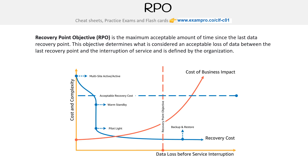We have cost and complexity, but this time it's replaced with data loss before service interruption. So for multi-site, it's going to be very expensive and high up here. It's not like a perfect curve — it looks a bit different. Here we have warm standby, pilot light. You'll see that the data loss is not a big deal. But for backup and restore, it really juts out there. So you can see that you can get pretty good results just with the pilot light.